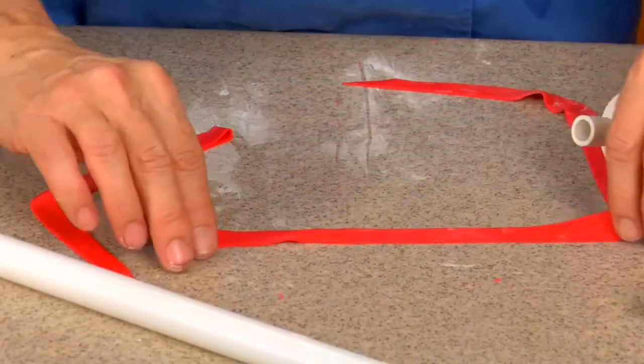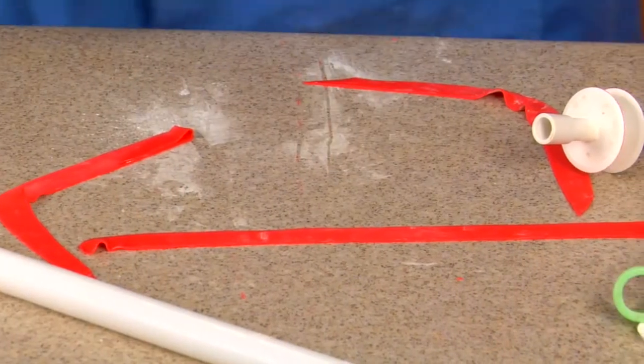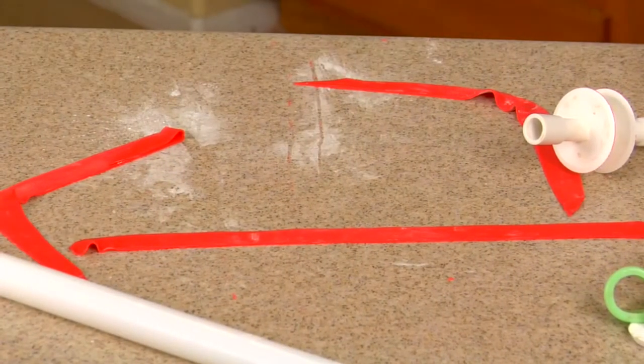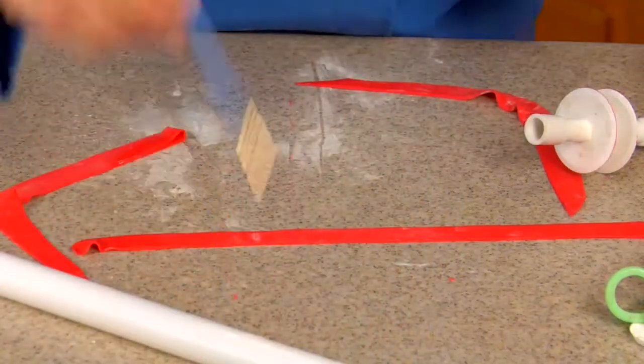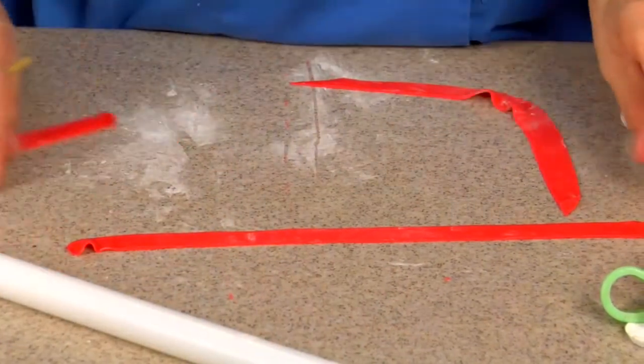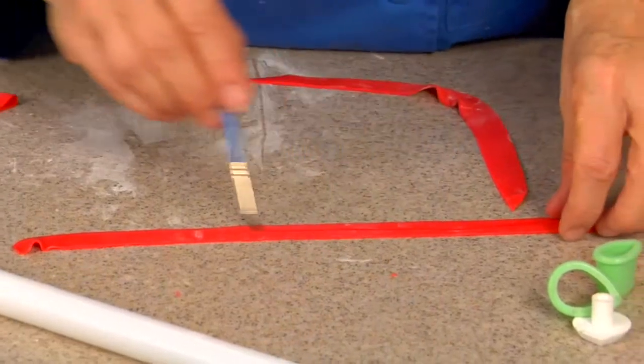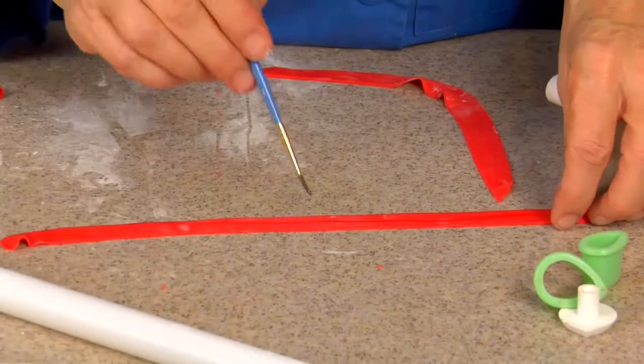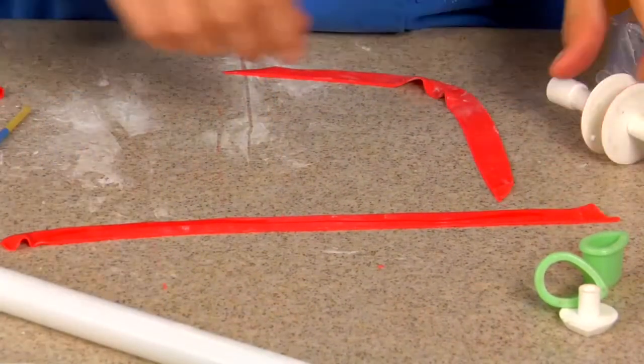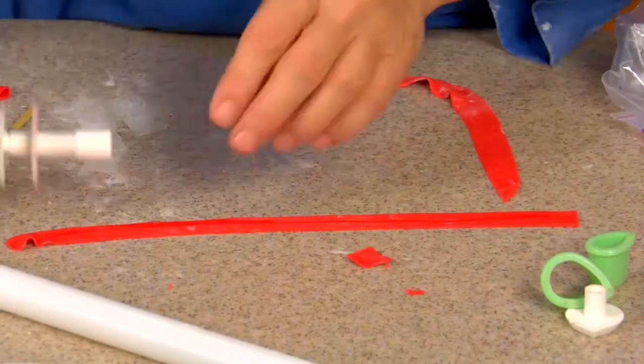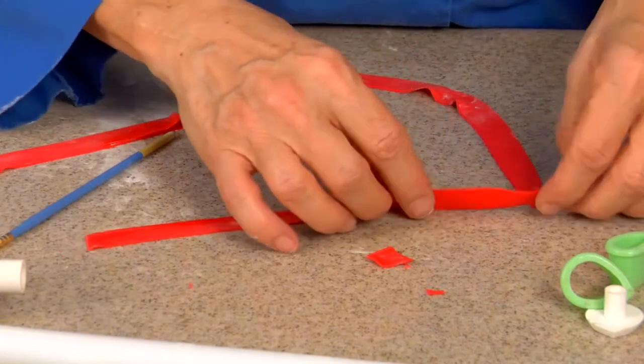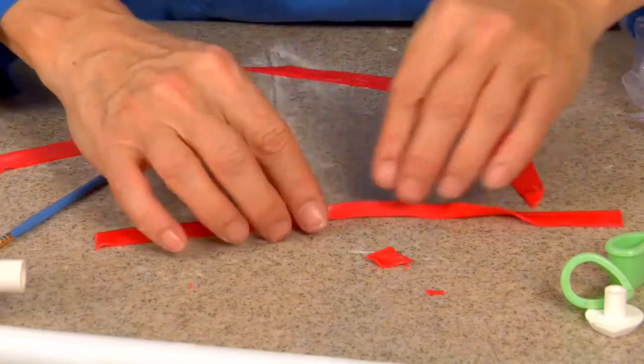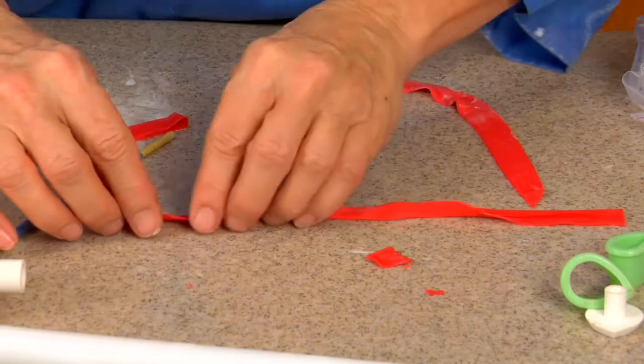Then we take a little bit of water or alcohol, or whatever you happen to have, and we're going to fold it in half. I'm going to cut off these edges. Fold it in half, so now it's a quarter of an inch.